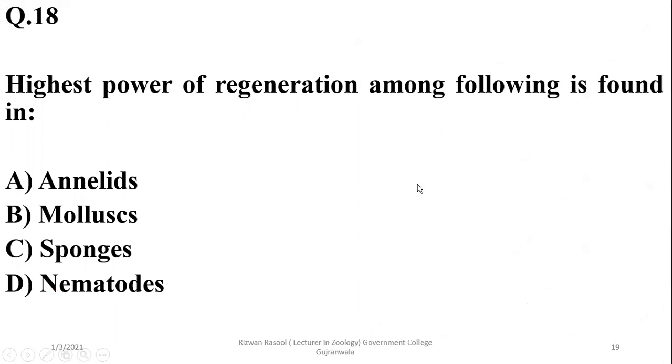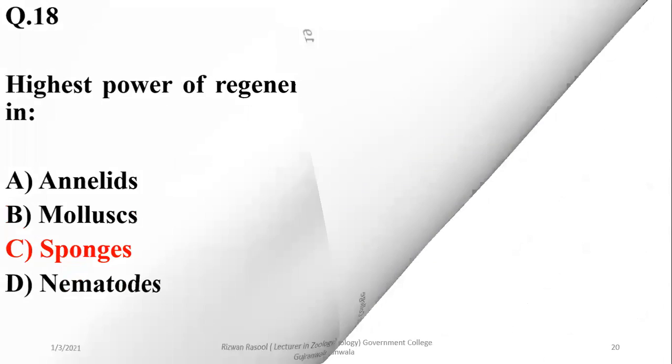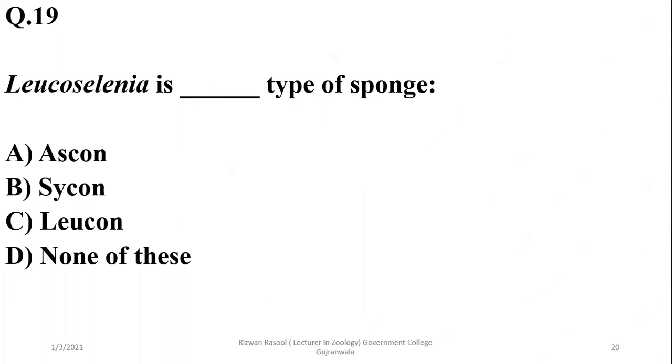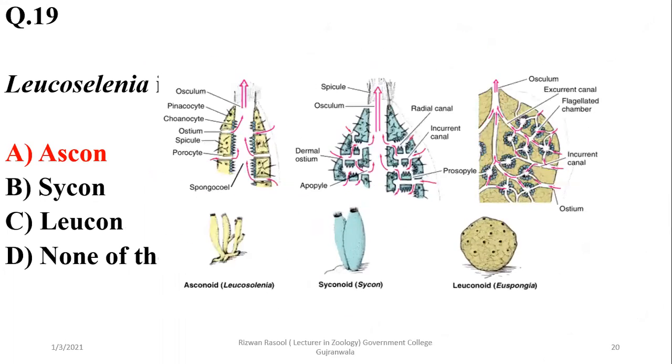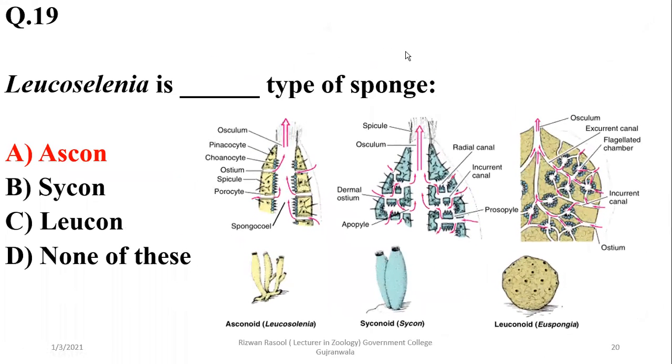Highest power of regeneration among the following is found in sponges, so the right option is alpha. This is an image from Hickman zoology showing asconoid Leucosolenia, syconoid Sycon, and leuconoid Euspongia. The right option is alpha.